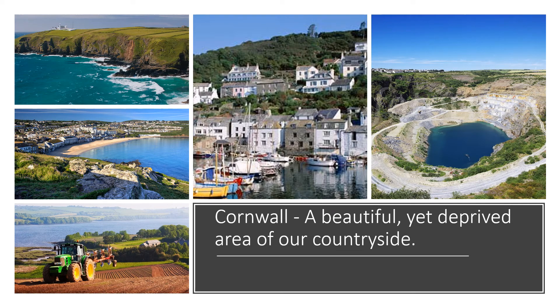Cornwall is largely coastal. It is a peninsula right in the south west of the United Kingdom, and it borders the county of Devon. It is a beautiful place to visit and to live. However, it is very, very deprived. We are going to explore the levels of deprivation in Cornwall throughout this lesson and think about the challenges that this then brings.